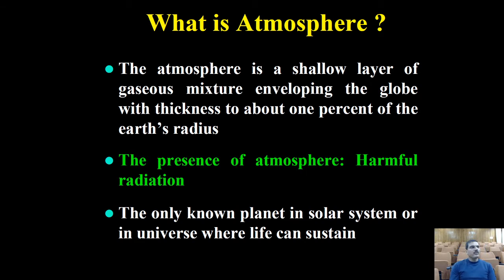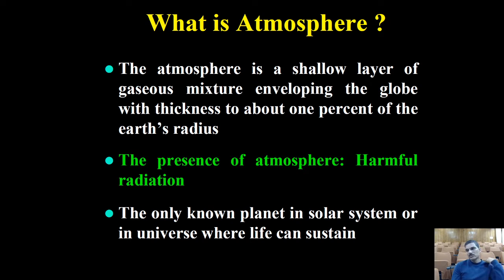The simplest definition of the atmosphere, as far as Earth is concerned, is that it is a shallow layer of gaseous mixture enveloping this globe, with a thickness of about one percent of the Earth's radius. The atmosphere protects us from harmful radiations coming from the Sun. Earth is the only known planet in our solar system or universe where life is sustained, so we need to understand the Earth's atmosphere.